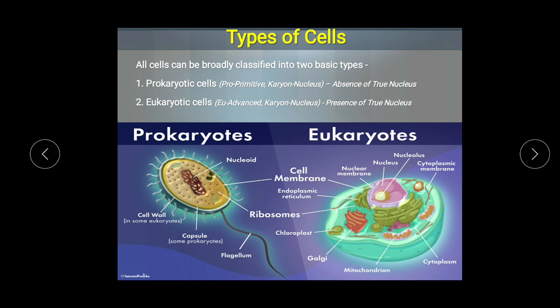This is the prokaryotic cell and this is the eukaryotic cell. Organisms which show the prokaryotic cell are called prokaryotes, while organisms having eukaryotic cells are called eukaryotes. Plants, animals including humans, fungi, and protists are the eukaryotes, while bacteria and archaea are the prokaryotes.